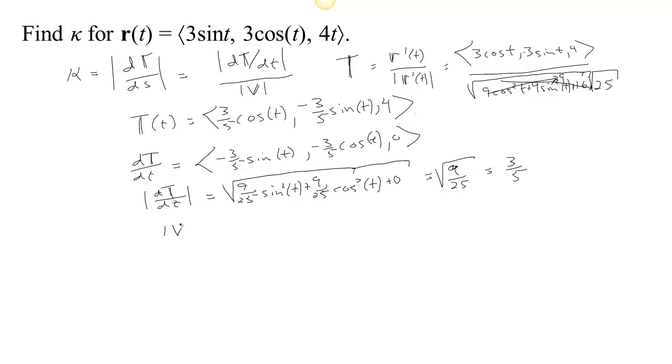And then we've already calculated that the speed was equal to 5. Because down here, here's the speed and it turned out to be the square root of 25, which is 5.